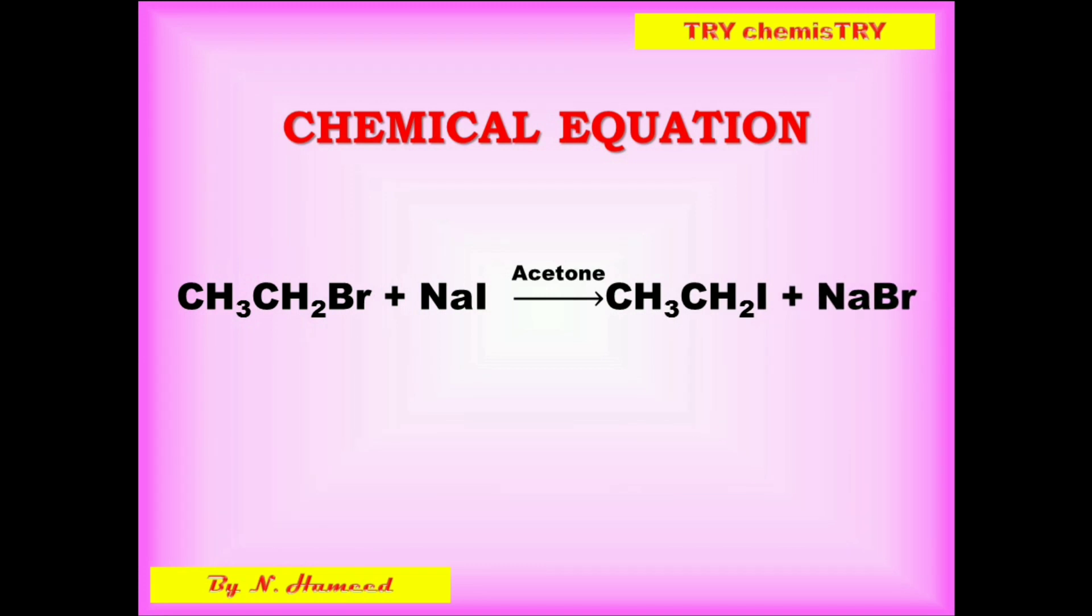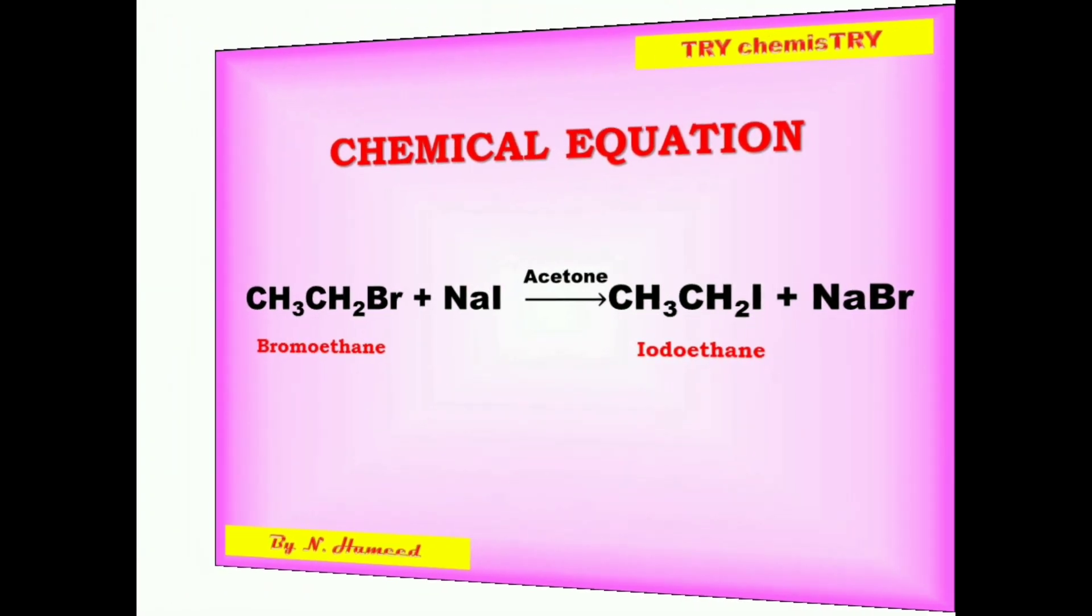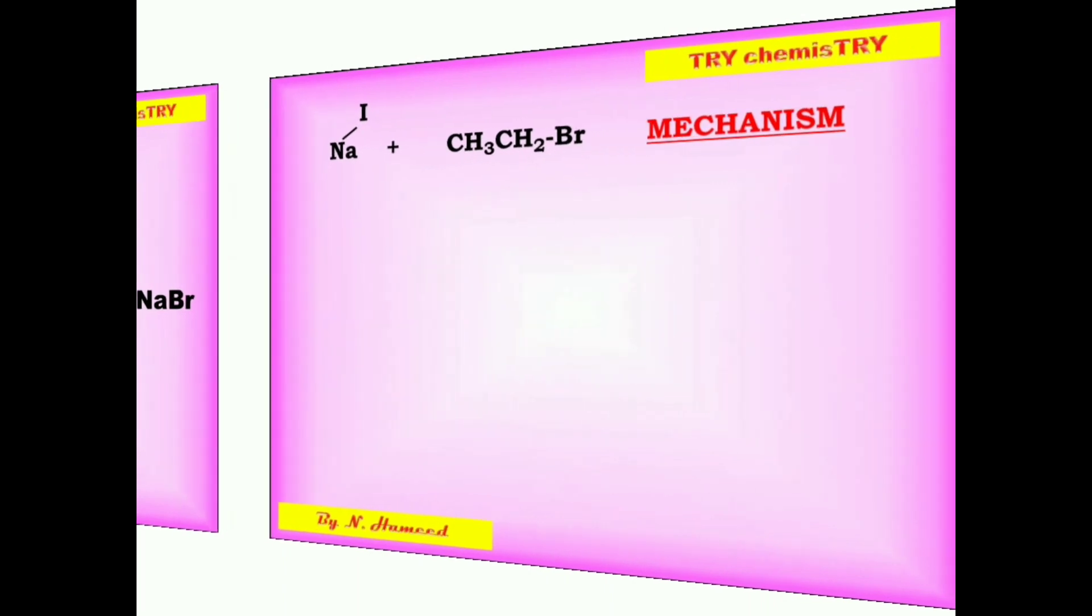This is one of the methods we can use to prepare iodo alkanes from bromo or chloro ethane using sodium iodide.